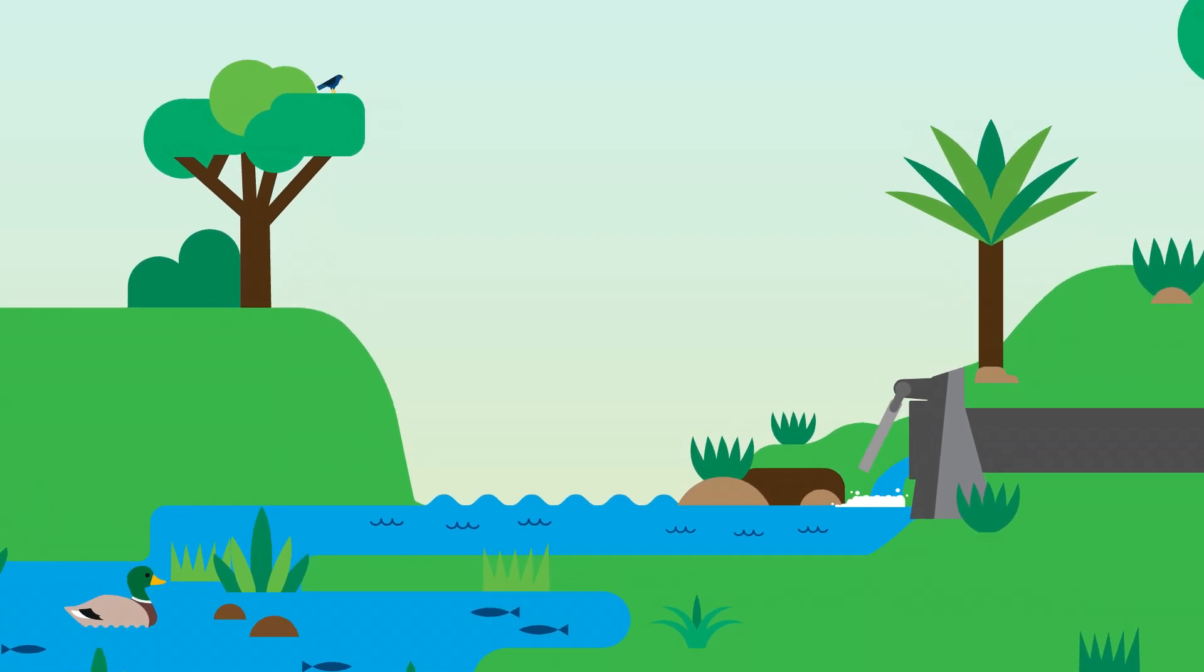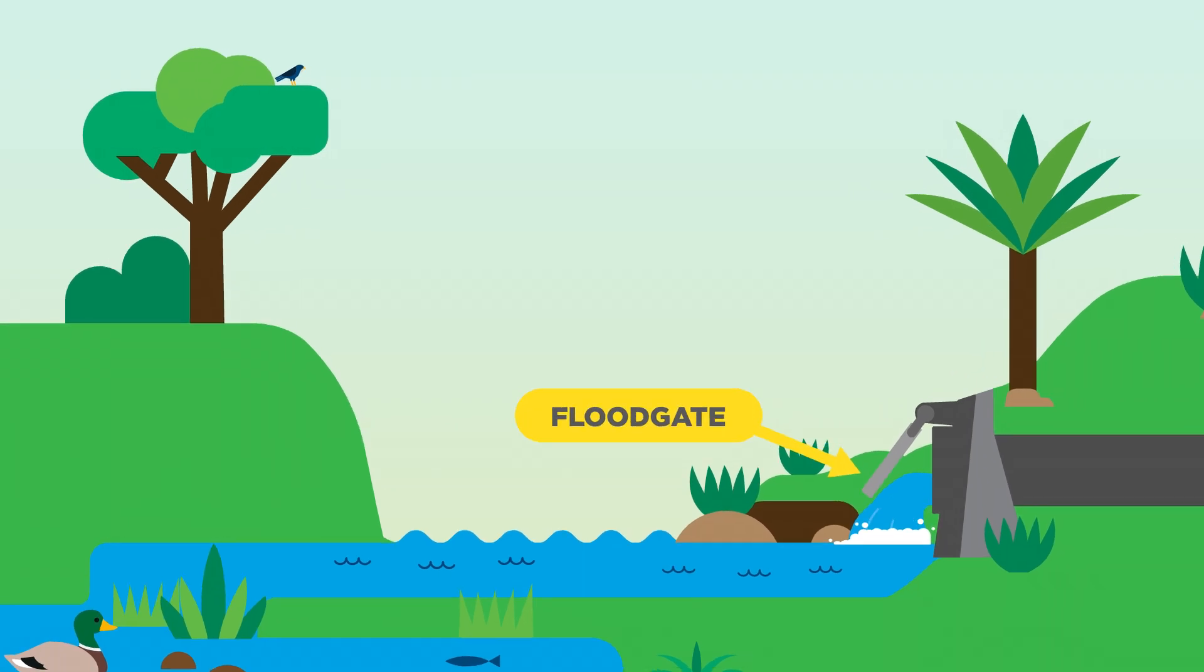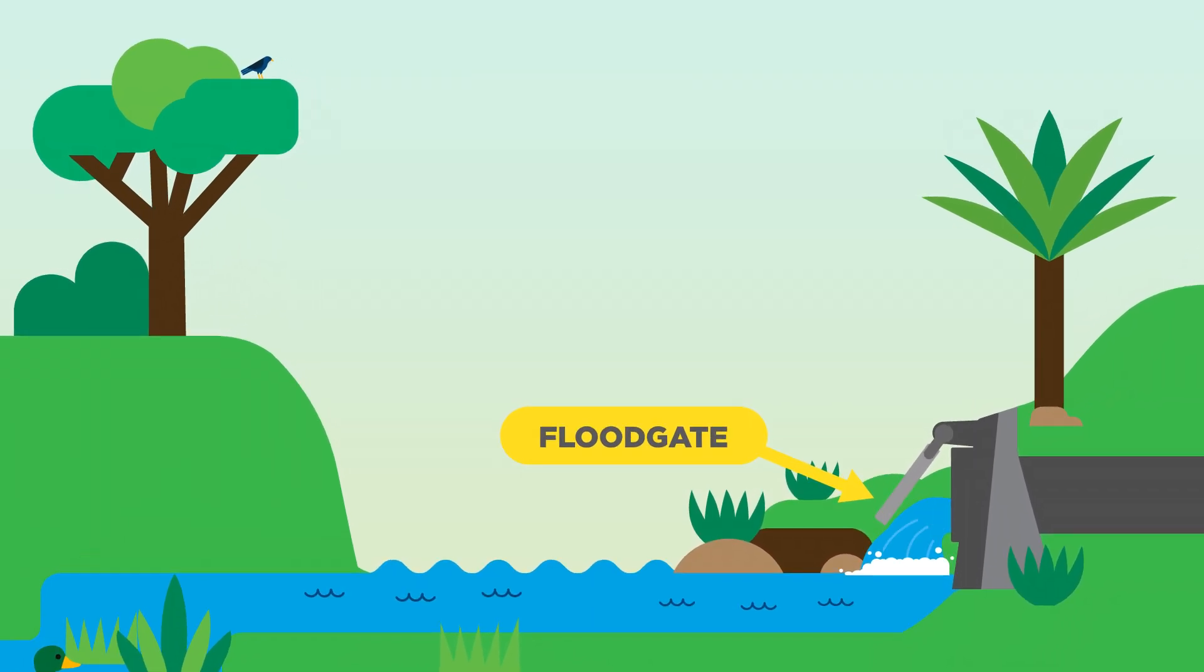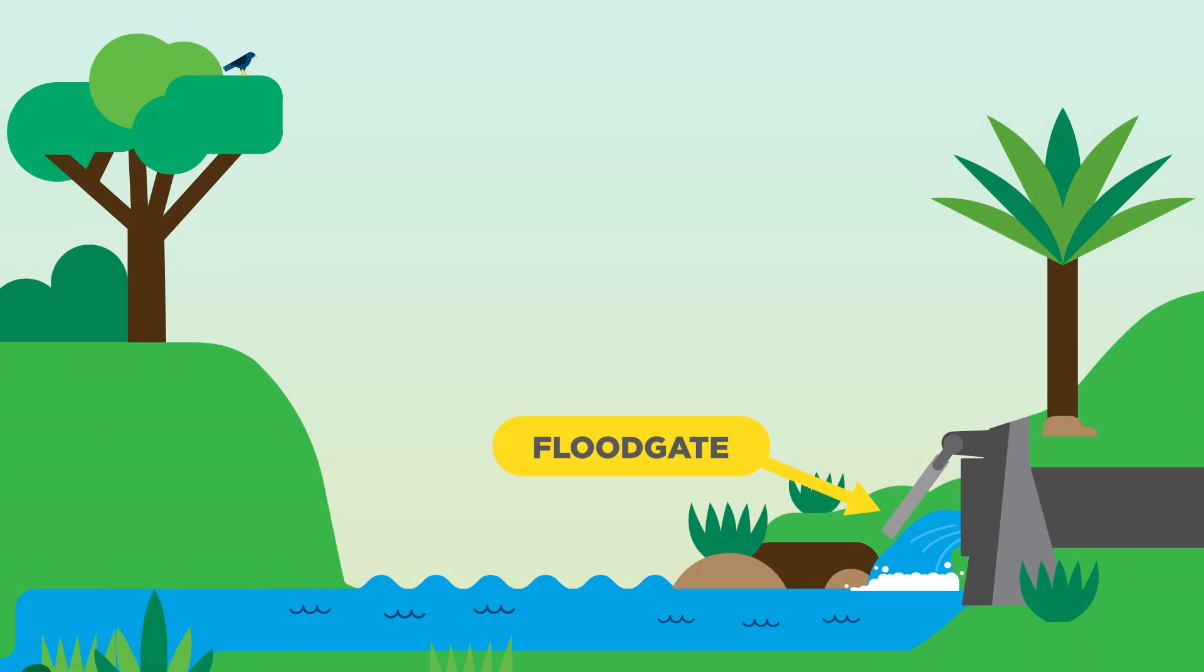Flood gates are essentially gates at the ends of culverts or pipes that allow water to flow in one direction during heavy rain events.